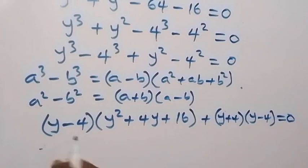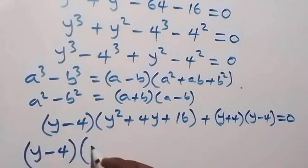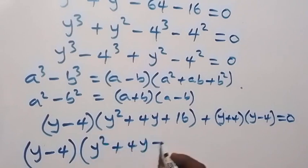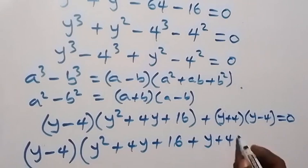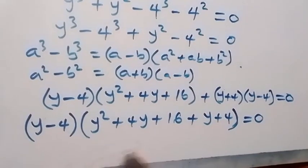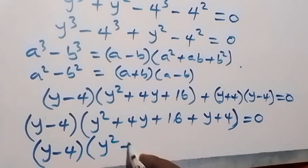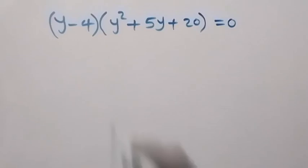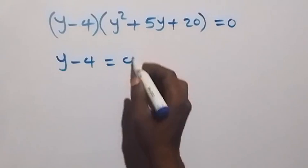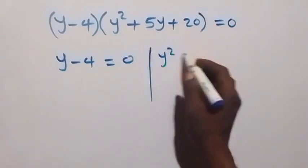What we have now is y minus 4 common here. So when we factor that out, this gives us y minus 4, times bracket y squared plus 4y plus 16 plus y plus 4, close bracket, equals to 0. Simplifying inside the bracket gives us y minus 4, times bracket y squared plus 5y plus 20, equals to 0.